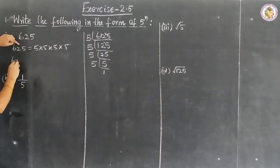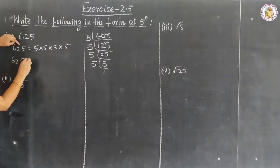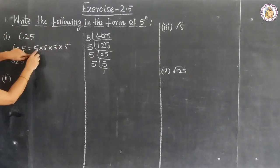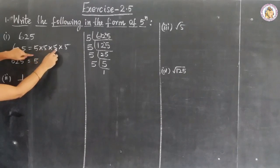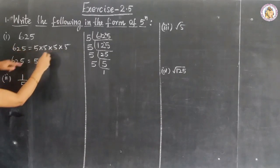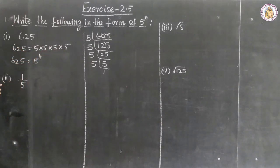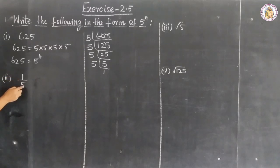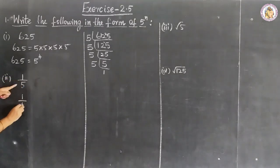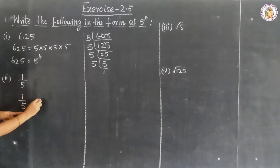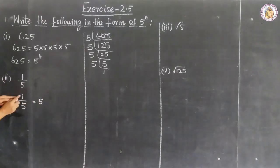So 625 equals 5 to the power of 1, 2, 3, 4 — that is, 5 to the power of 4. Question number 2: 1 by 5. Now, 1 by 5 is equal to 5 to the power of 1 by 5; since 5 is in the denominator, it becomes 5 to the power of minus 1.